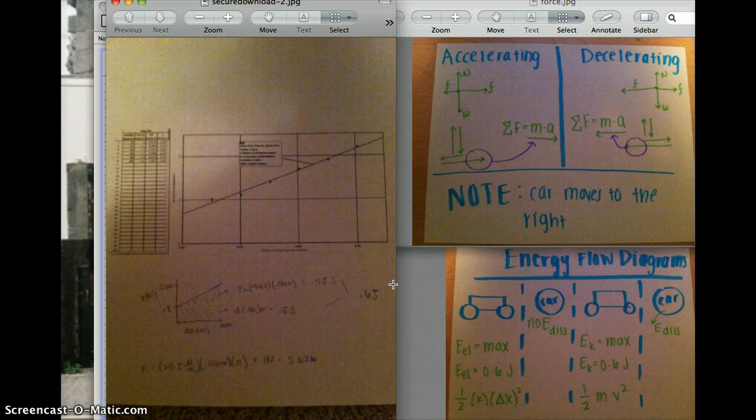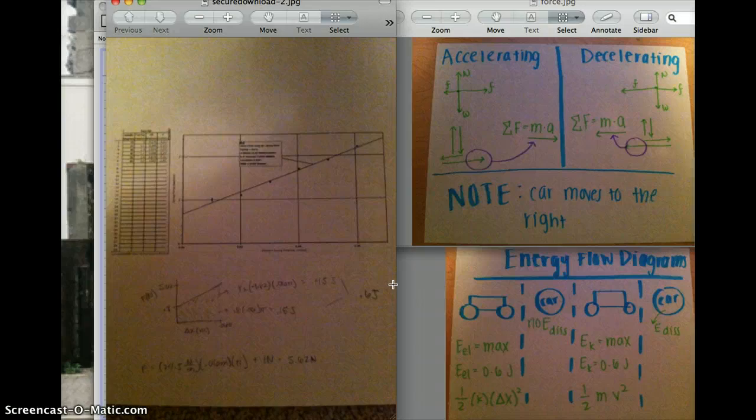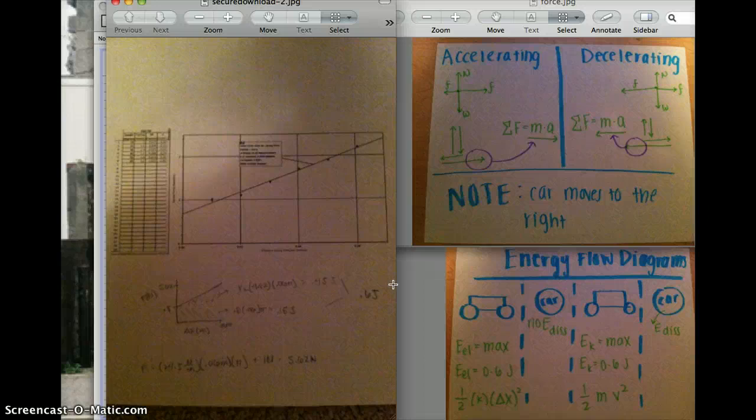This formula was F equals MA. Since the mass of my car was 0.68 kg, I multiplied that by my acceleration, which was negative 0.0399 meters per second squared, altogether getting a force of negative 0.027 newtons.